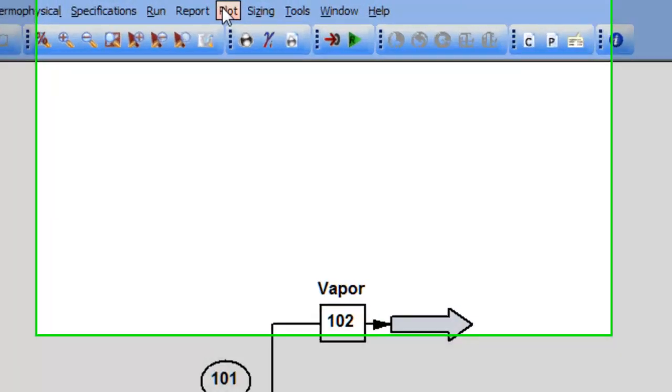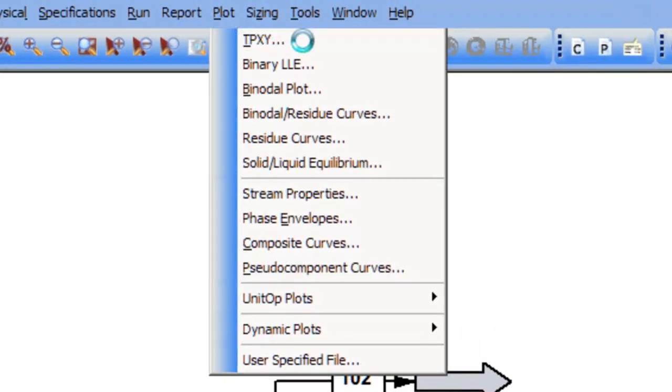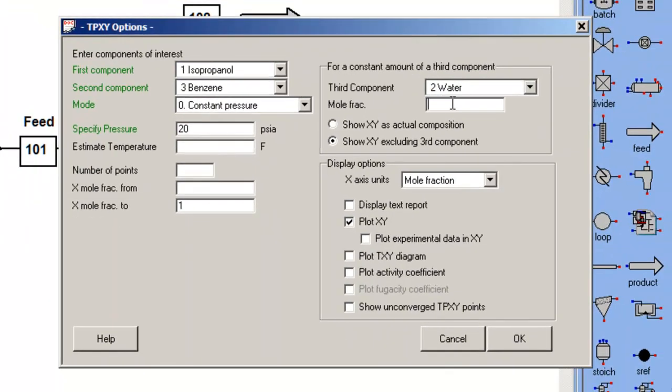I can look at the impact of having a slight amount of water available in the liquid phase by using an option in ChemCAD to specify the third component. In this case, the primary components are isopropanol and benzene, and I'm going to mandate that the liquid phase is 5% water.